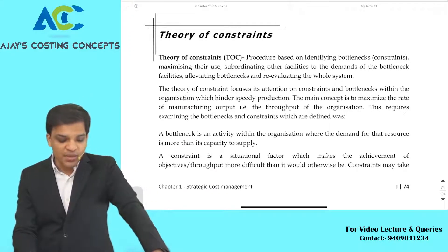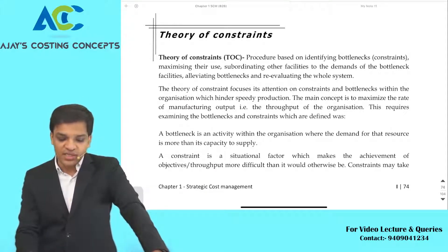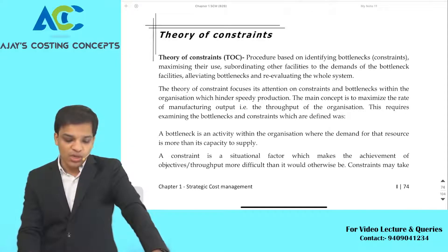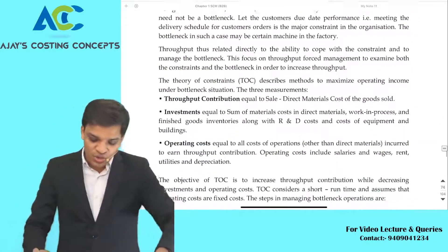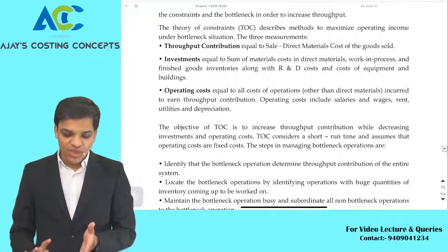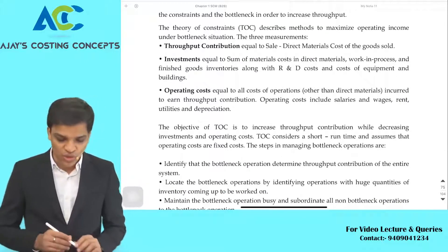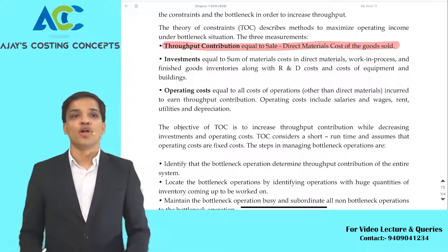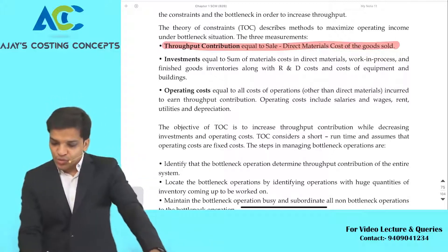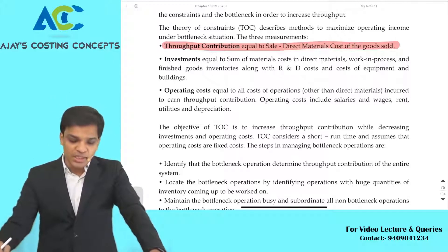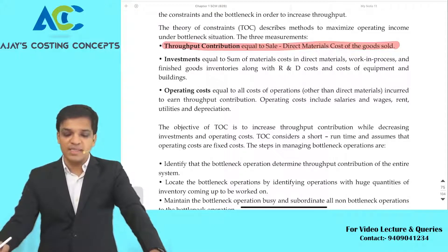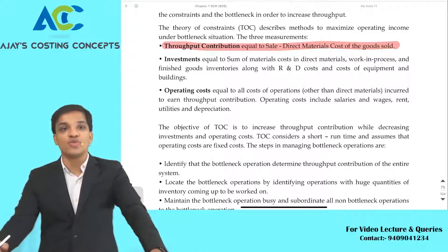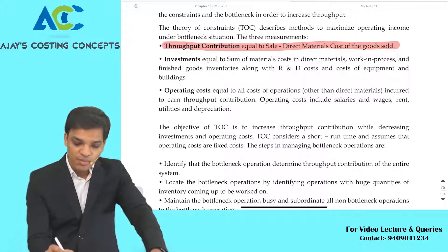What is throughput contribution? Throughput contribution = Sales minus direct material cost of goods sold. This is a very important formula. Only the material cost of goods sold is considered — not labor, not overheads — just direct material cost. That is the throughput contribution.